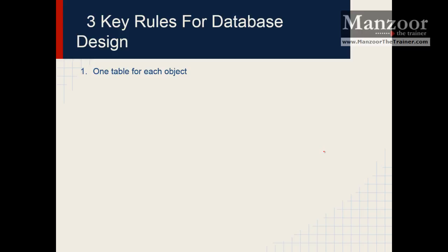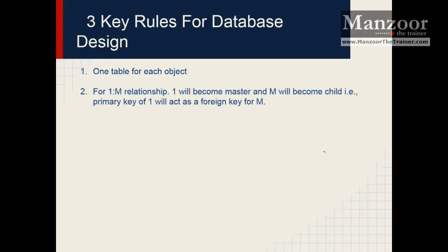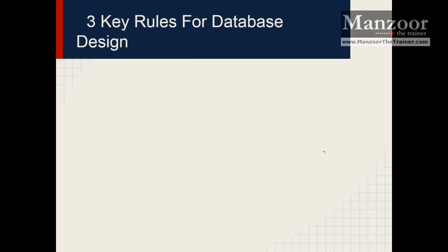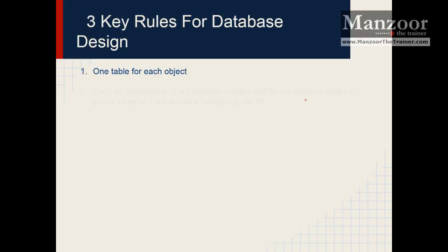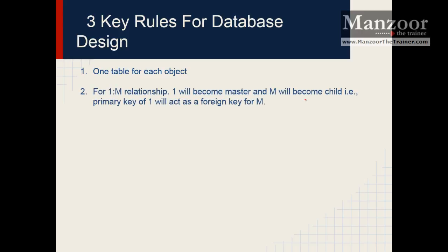The second rule is for a one-to-many relationship. In a one-to-many relationship, the 'one' side will become the master table, and the 'many' side will become the child table. The primary key of the master table will act as a foreign key in the child table.